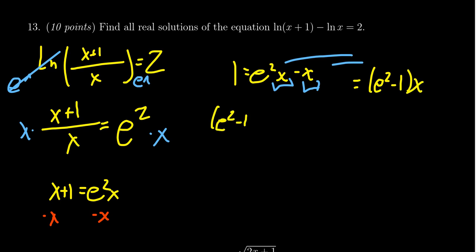We have (e^2 - 1)·x = 1. We need to divide by the coefficient e^2 - 1, so those will cancel out, and we get as our solution x = 1/(e^2 - 1).